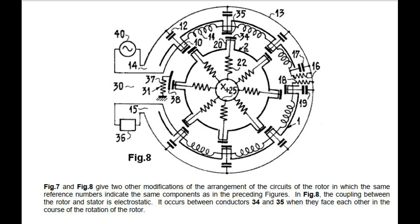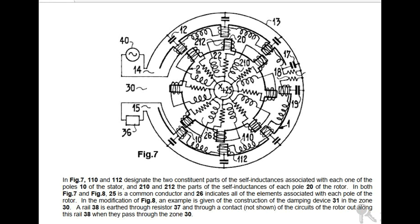Fig 7 and Fig 8 give two other modifications of the arrangement of the circuits of the rotor in which the same reference numbers indicate the same components as in the preceding figures. In Fig 8, the coupling between the rotor and stator is electrostatic. It occurs between conductors 34 and 35 when they face each other in the course of the rotation of the rotor. In Fig 7, 110 and 112 designate the two constituent parts of the self-inductances associated with each one of the poles 10 of the stator, and 210 and 212 the parts of the self-inductances of each pole 20 of the rotor.